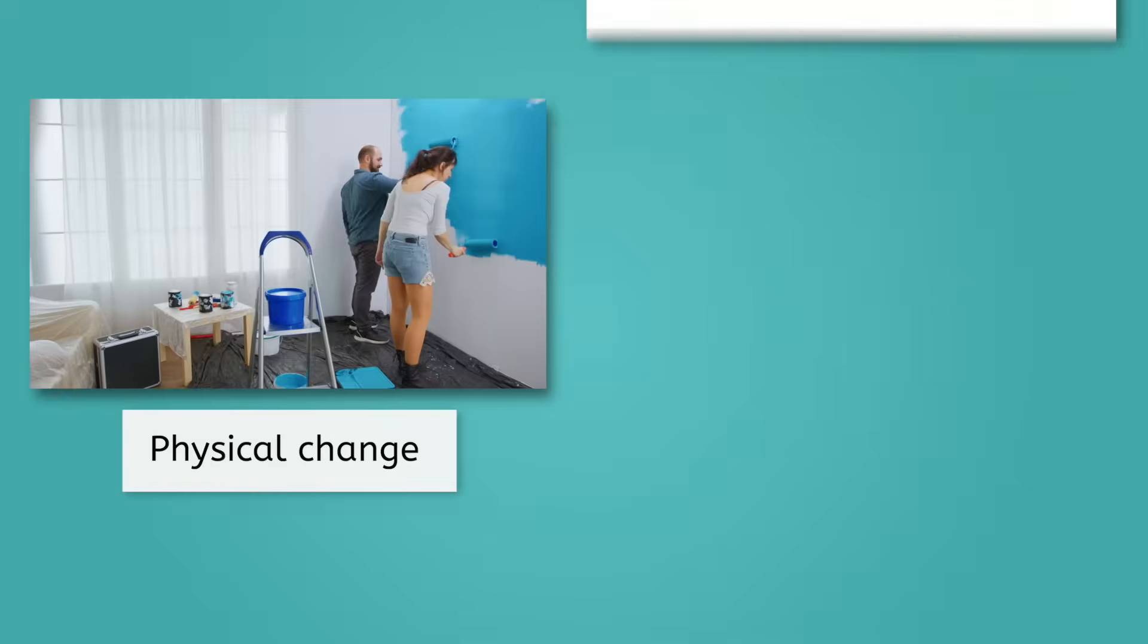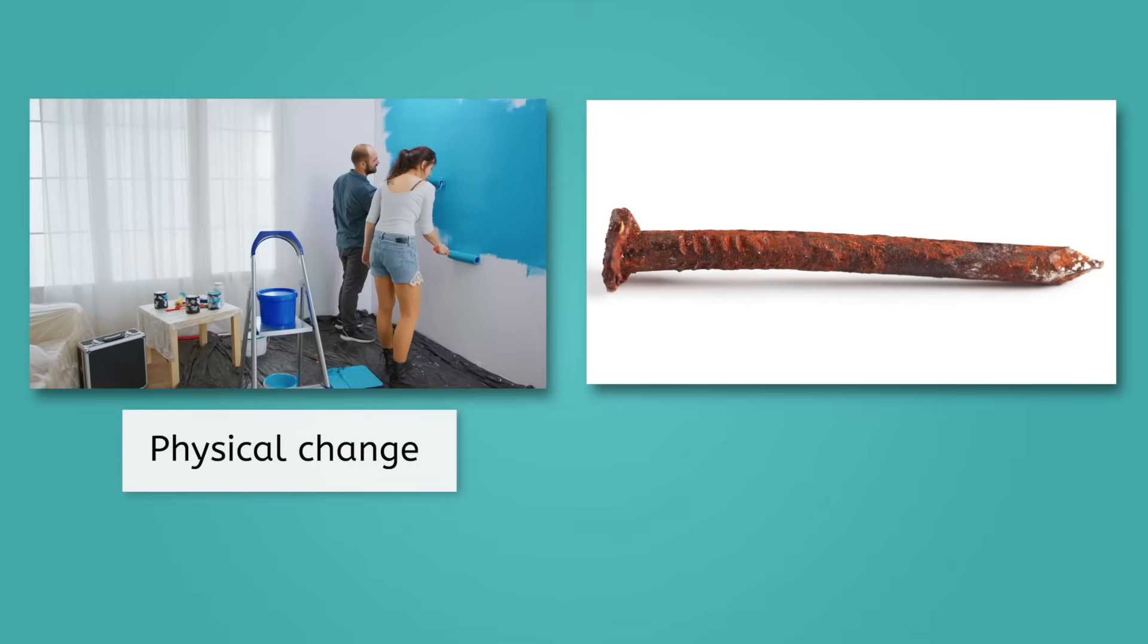However, if rust forms on a metal, there is a color change, but it is a chemical change.